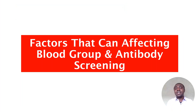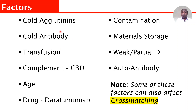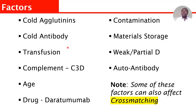Let's look at the factors that can affect blood group and antibody screening. Number one is cold agglutinins. Cold agglutinins can affect it — if you haven't watched my video on cold agglutinins, go and watch it. In terms of cold agglutinins, some antibodies react better at cold temperatures. If you are running blood group and antibody screening incubated at 37°C, you might get negative results — that does not mean the antibody is absent; it is a cold antibody. You can see this mainly in terms of cold antibodies.